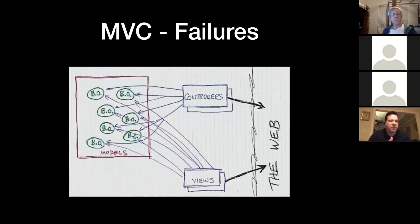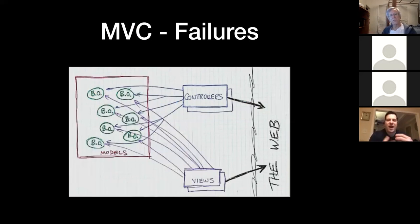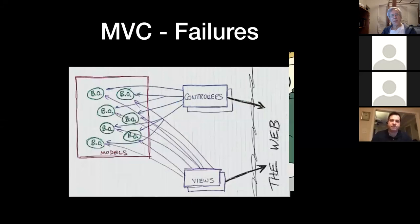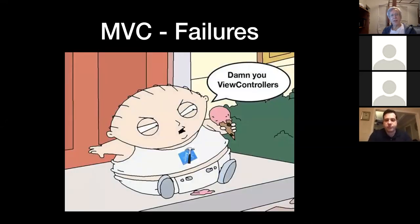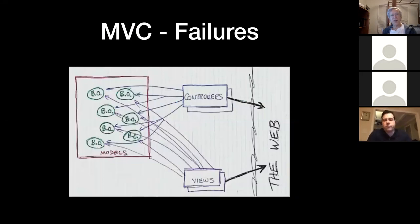The view would do the same thing — eventually reach into the model to get data and do more with the state. You ended up with a rat's nest of dependencies because updating a view meant changing a model, which meant changing a controller. The boundaries were not well-defined in a large-scale application. As you started to develop larger applications — server-level applications on the web and mobile with millions of users — MVC really wasn't cutting it.